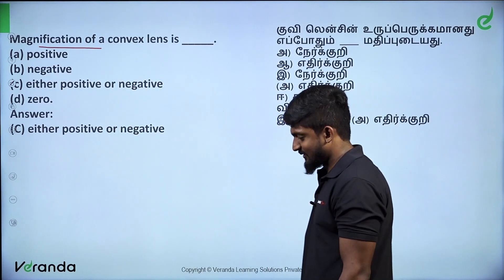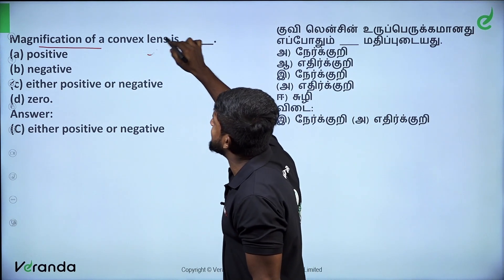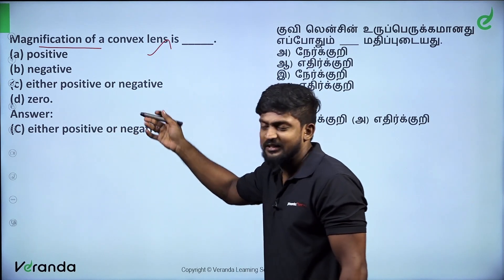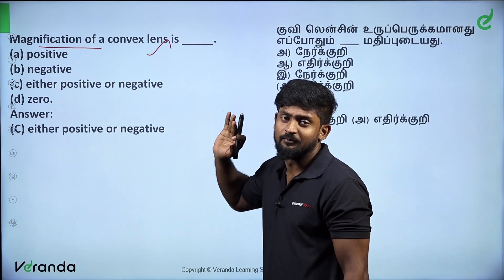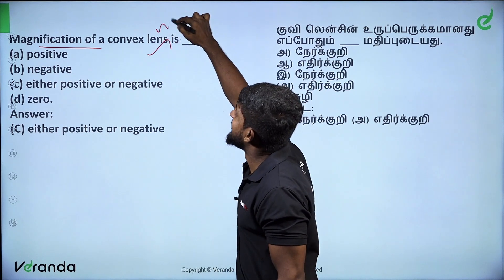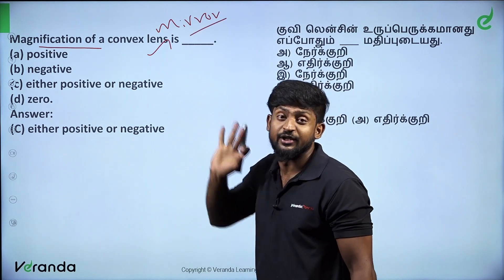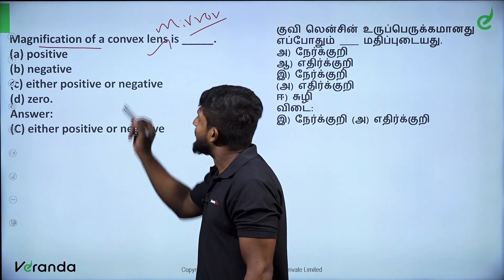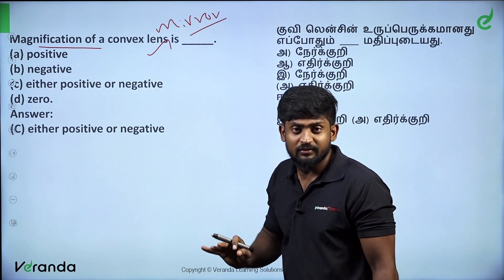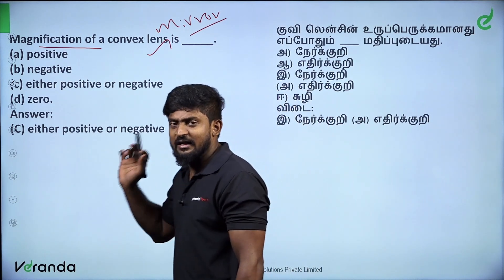Magnification of a convex lens is either positive or negative. In contrast, magnification of a convex mirror is only positive. So for a convex lens, the magnification can be positive or negative.